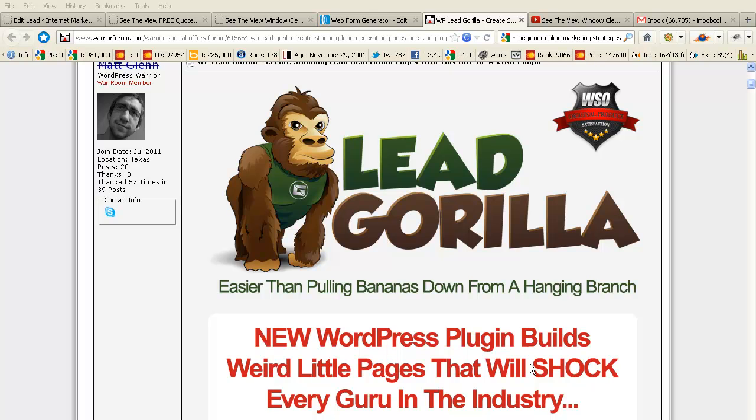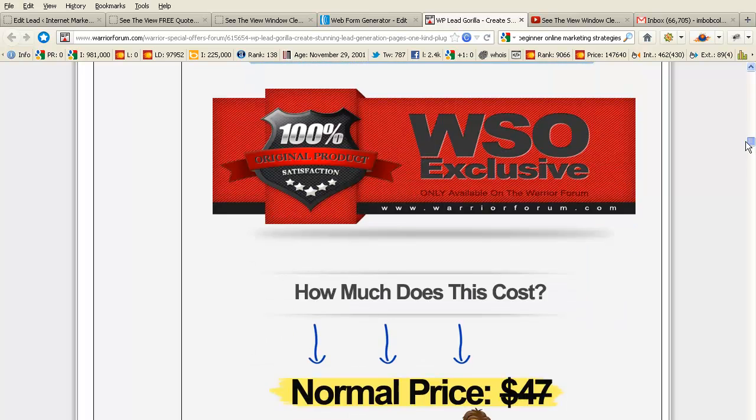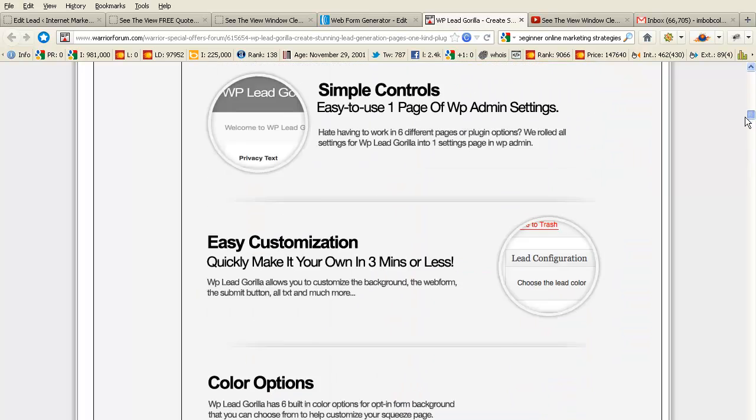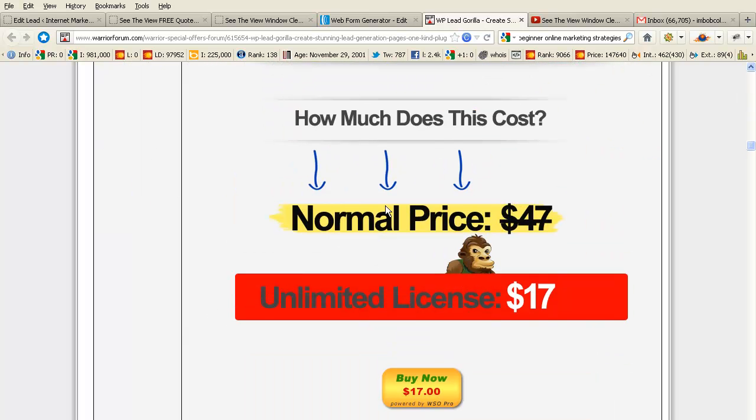How are you going to make money with this plugin? Well, one of the things is that if you purchase the plugin now, it comes with what's known as a developer's license. It's $47. Right now, they're giving you an unlimited license for $17. You can't beat that.